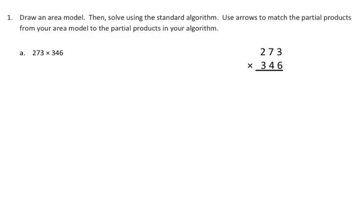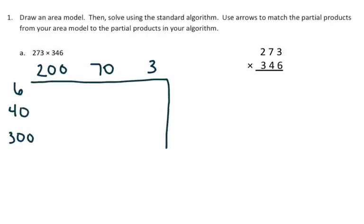So we have 273, and when I decompose the number, I have 273, and I'm decomposing the other number, I have 6, I have 40, and I have 300. Drawing my rectangles for the area model.